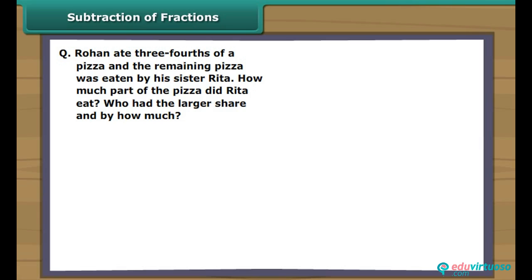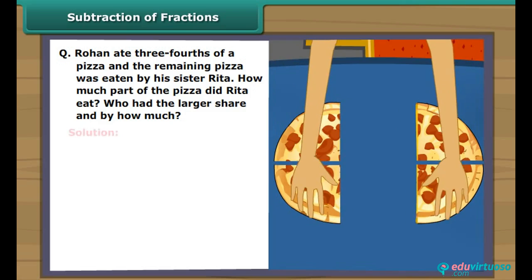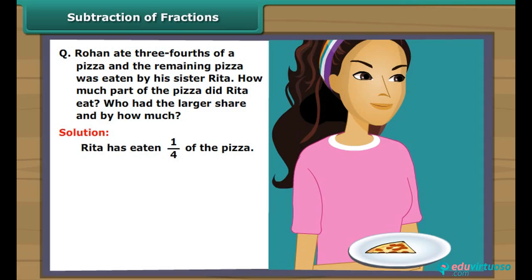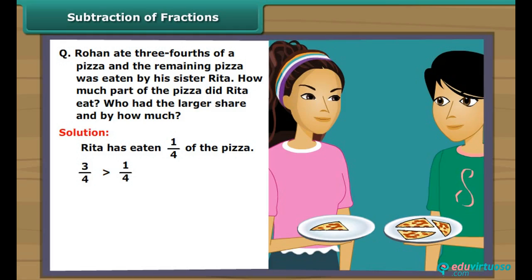Subtraction of fractions: Rohan ate three-fourths of a pizza, and the remaining pizza was eaten by his sister Rita. How much part of the pizza did Rita eat, who had the larger share, and by how much? The figure shows that Rita ate one-fourth of the pizza. Comparing three-fourths and one-fourth, we find that three-fourths is greater, so Rohan has the larger share.